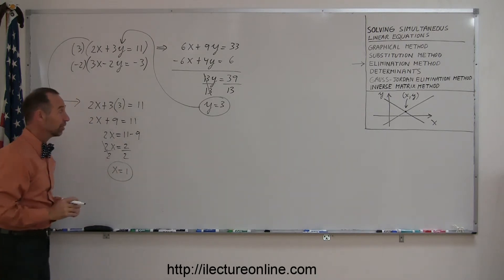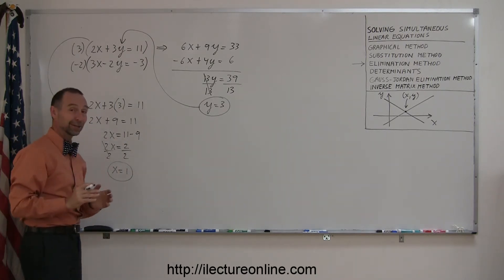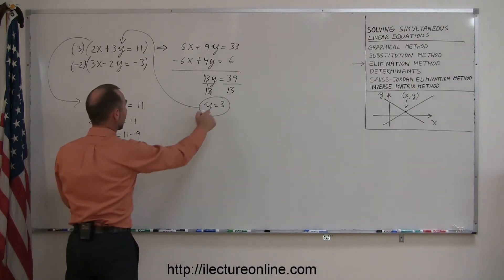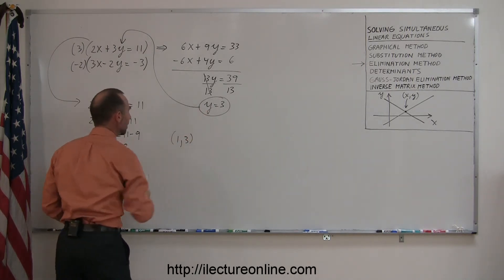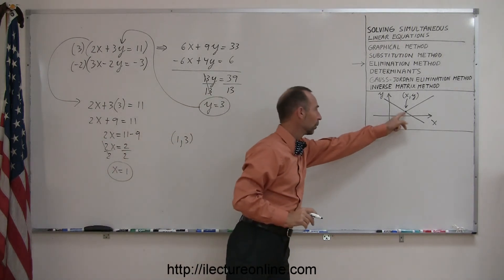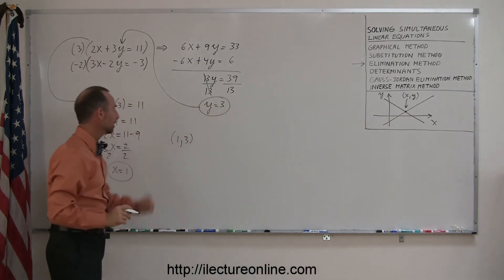So my solution, therefore, if I did everything correctly, has to be x equals 1, y equals 3. So we can write that as 1 and 3. That's the location, the point, where the two lines cross with the x and y coordinates.